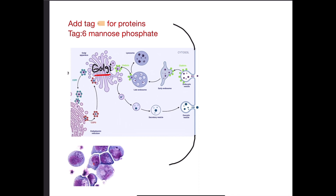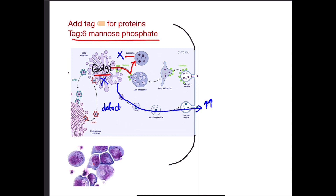When a defect occurs in N-acetylglucosamine-1-phosphotransferase, the Golgi apparatus fails to tag proteins. As a result, digestive enzymes and proteins are transported outside the cell, leading to high lysosomal substances in the serum, while cell debris builds up inside the cell causing inclusion bodies.